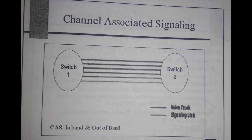Channel Associated Signaling is a form of digital communication signaling, often referred to as PTS, that is per trunk signaling. It uses routing information to direct the payload of voice or data to its destination — that is, routing information is encoded and transmitted in the same channel as the payload itself. This is beneficial because it conserves bandwidth, as there is no separate channel for signaling.